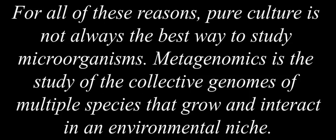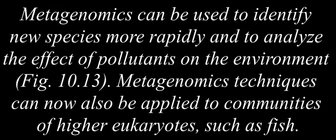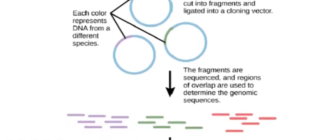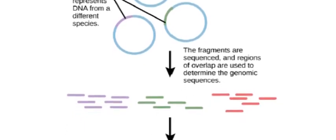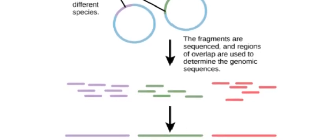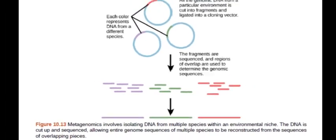Metagenomics is the study of the collective genomes of multiple species that grow and interact in an environmental niche. Metagenomics can be used to identify new species more rapidly and to analyze the effect of pollutants on the environment. Metagenomics techniques can now also be applied to communities of higher eukaryotes, such as fish. Metagenomics involves isolating DNA from multiple species within an environmental niche. The DNA is cut up and sequenced, allowing entire genome sequences of multiple species to be reconstructed from the sequences of overlapping pieces.